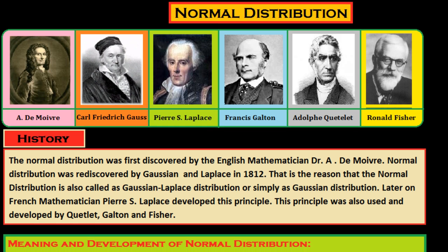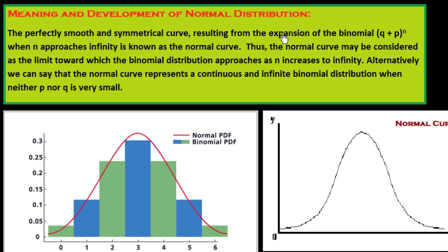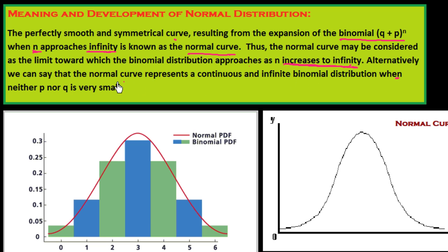Now I would like to explain the meaning and development of normal distribution. The perfectly smooth and symmetrical curve resulting from the expansion of the binomial (q + p)^n, when n approaches infinity, is known as the normal curve. Thus the normal curve may be considered as the limit to which the binomial distribution approaches as n increases to infinity. Alternatively, the normal curve represents a continuous and infinite binomial distribution when neither p nor q is very small.